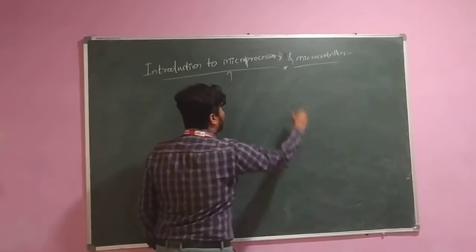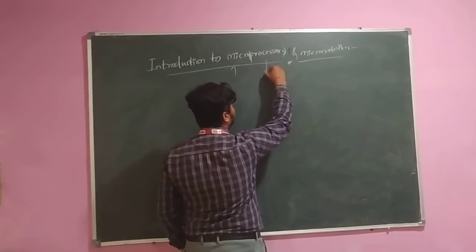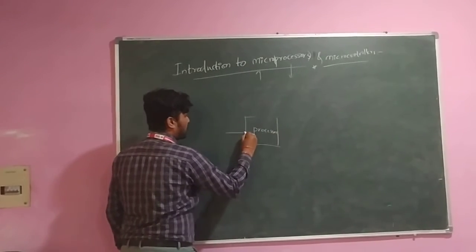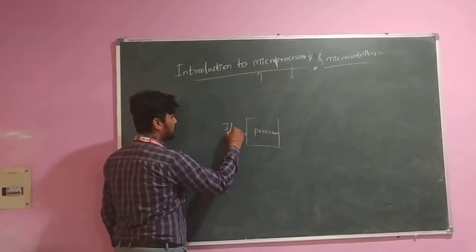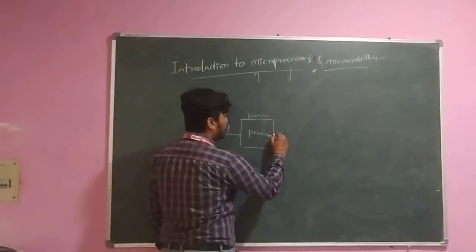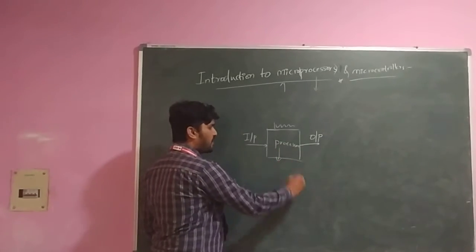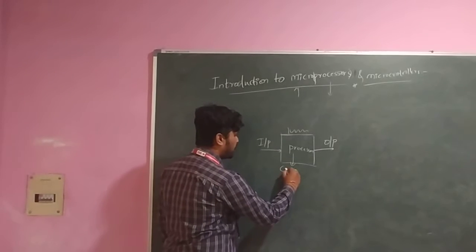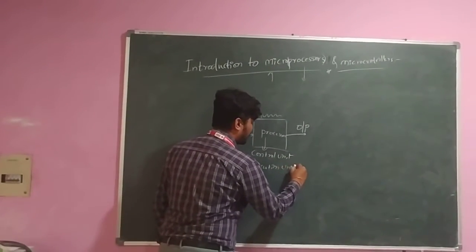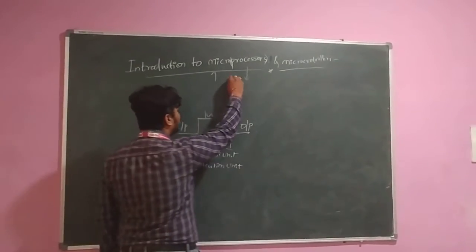So first, let us start with the microprocessor. What is a processor? The processor is nothing but a CPU in a computer which processes the data according to the input given by the user. We give an input to the processor, it processes the data, and finally it produces the exact output you want. Inside the processor, we can find different computational blocks — that is the control unit and execution unit.